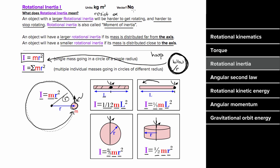Rotational inertia is not a vector, so it's always positive or zero. The units, since it's MR², are kilograms times meters squared.